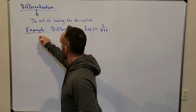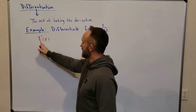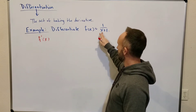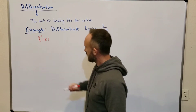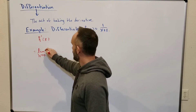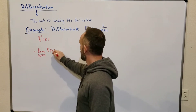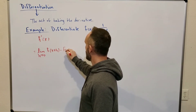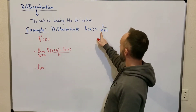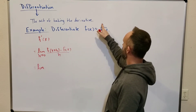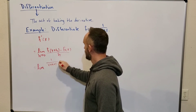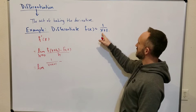So f'(x) represents the slope of the tangent line at any value x for this function. If you were to graph this curve, you could imagine the slopes of the tangent lines. So f'(x) would be the limit as h goes to 0 of [f(x+h) − f(x)] / h. We'll put x+h in here for f(x+h): we'll have 1/(x+h+1) minus f(x), which is 1/(x+1).